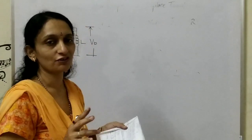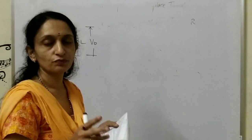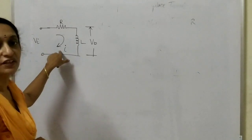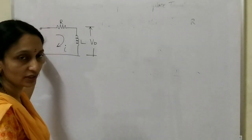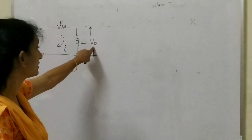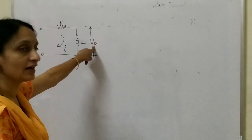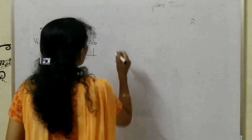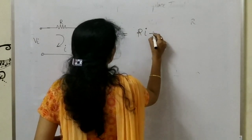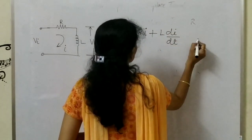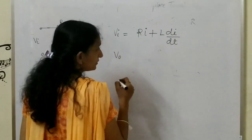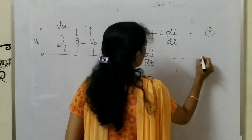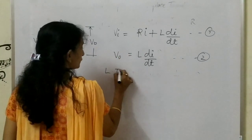The transfer function is Laplace transform of output to Laplace transform of input. We will obtain the voltage equation involving input voltage VI and output voltage V0. VI is given as input voltage. The output voltage V0 is across the inductor. So first, the input voltage equation is VI equals RI plus L·dI/dt, and the output voltage equation is V0 equals L·dI/dt.